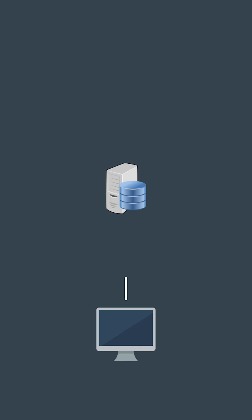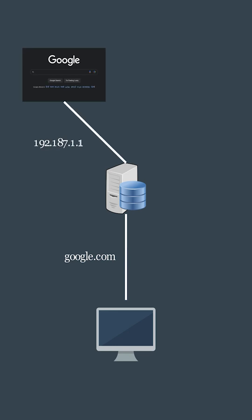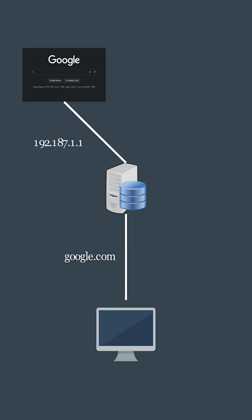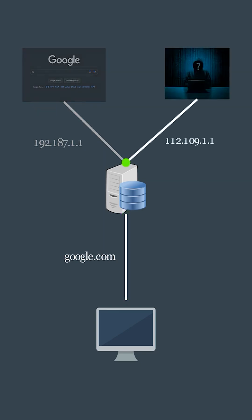Typically, when you attempt to open a website, your computer sends a request to a DNS server to translate the domain name into an IP address. Once the translation is completed, your browser is directed to the corresponding website. In a DNS spoofing attack, also known as DNS poisoning, attackers manipulate the database of DNS servers by altering the IP address associated with a domain name to a malicious one. Consequently, when a user tries to access the website using the domain, they are illicitly redirected to the malicious IP address instead of reaching the legitimate destination, thus exposing them to potential security risks.